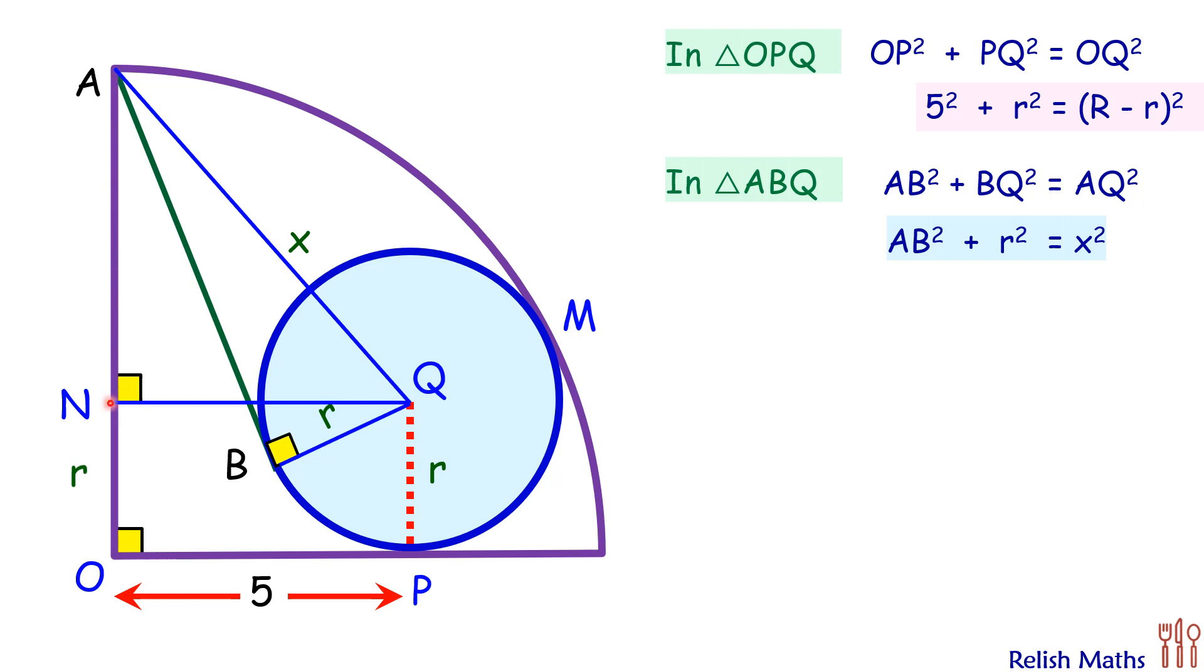In triangle ANQ, let's apply Pythagoras theorem. We will get AN² + NQ² = AQ². Putting the values, we will get (R - r)² + 5² = X².